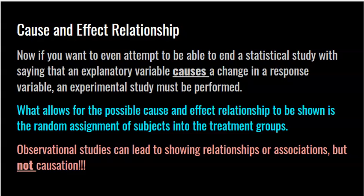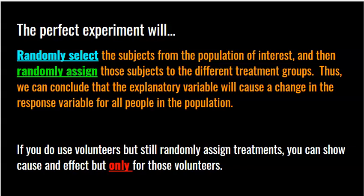In observational studies, all you do is observe — maybe ask questions, but you don't impose anything. It's not an experiment. In an observational study, you can show relationships and strong associations, but you just can't say that X causes Y. At the end of the day, the perfect experiment is one that will randomly select subjects from the population of interest and then randomly assign those subjects to the different treatment groups.